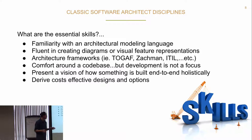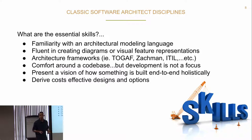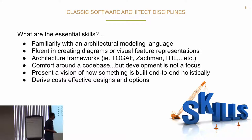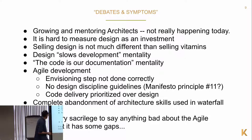Essential skills to become a software architect include fluency in an architectural modeling language, creating diagrams and visual representations, and familiarity with frameworks like TOGAF, Zachman, and ITIL. Some comfort around a code base helps. The key role is to present a holistic vision of how something is built and drive cost-effective designs and options as you build a platform.